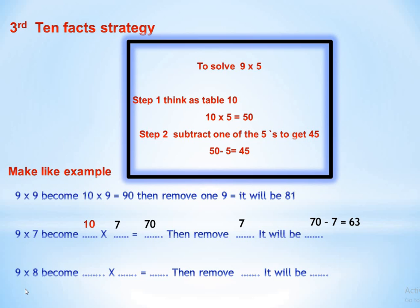The last ten fact example: 9 times 8. Change 9 into 10: 10 times 8 equals 80. Then subtract 8: 80 minus 8 equals 72.